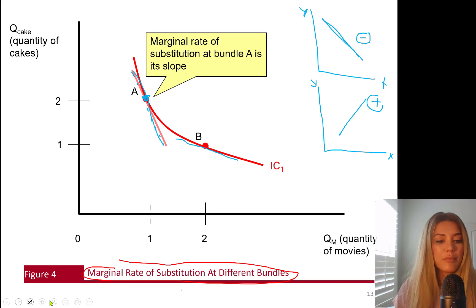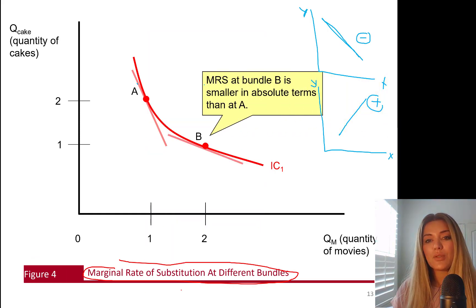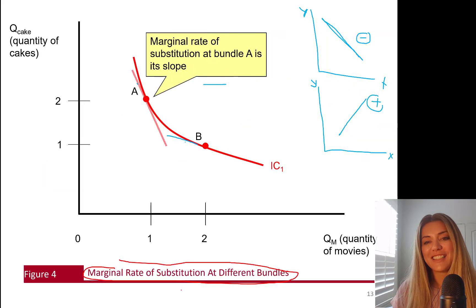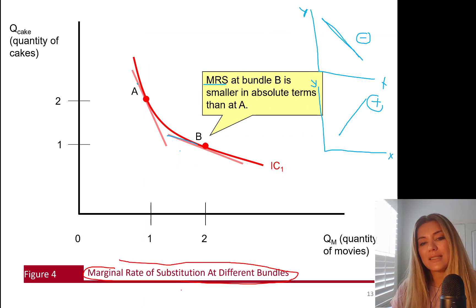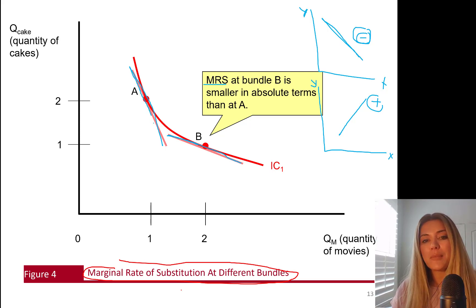So the marginal rate of substitution at bundle B is the slope of that tangent line. As you can see, the slope at point B is flatter — smaller in absolute terms. Point A has a steeper slope, a larger absolute value. Point B has a smaller slope.